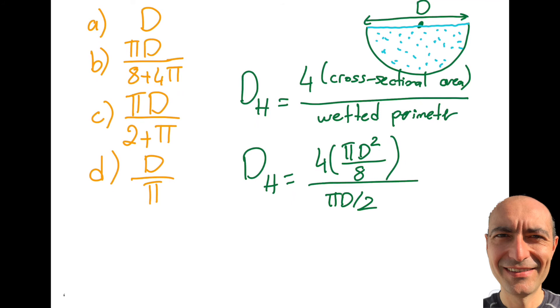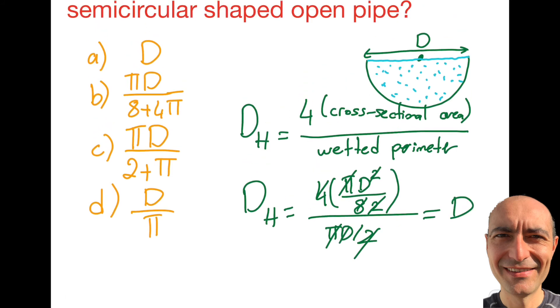Let's go ahead and do it. You can see over here that I will cancel—this will be 2, these two will cancel, this π cancels, this D cancels. Did you get it? I got DH equals diameter.